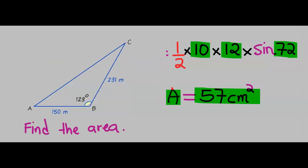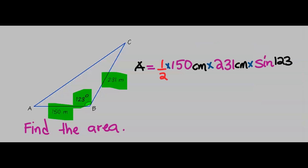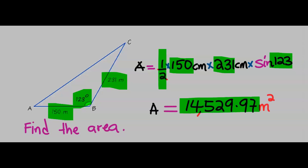Next, we are going to find the area of this triangle. Here we have two given sides and an angle. The area of this triangle will be 1 over 2 times the two sides times sine of the given angle. And this is our area to two decimal places.